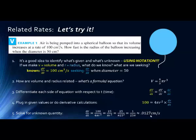Solving for dr/dt by dividing both sides by 4πr² and substituting r = 25, we get a rate of change of the radius of approximately 0.0127 centimeters per second. A positive derivative means the quantity is increasing; a negative derivative means it is decreasing — just as positive acceleration means speeding up and a negative rate means decelerating or braking.